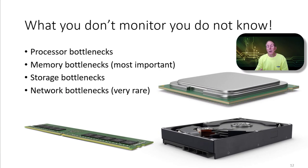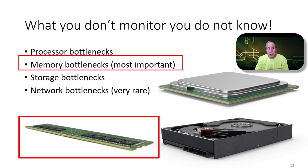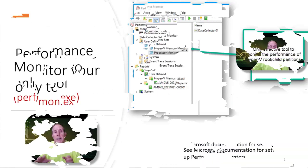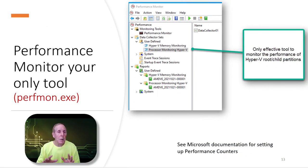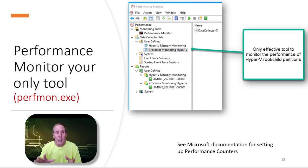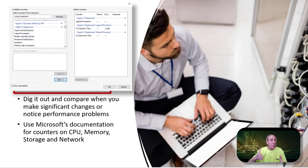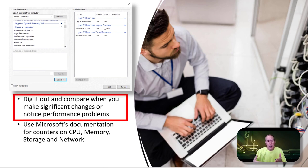What you don't monitor, you don't know. Microsoft has good documentation to help you monitor bottlenecks in your hardware subsystems. The ones to pay attention to most are memory, then CPU, then storage — storage is just slow and hard to get around. Network is the one you least have to worry about. Task Manager is not an effective tool for monitoring Hyper-V; you're going to have to use Perfmon. Once you've configured your Hyper-V environment, make sure you do a performance baseline so you can compare future changes against it.